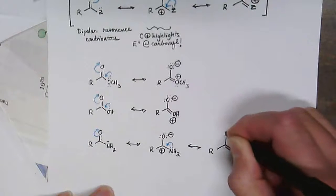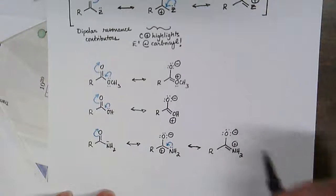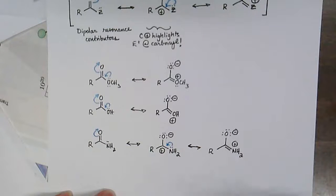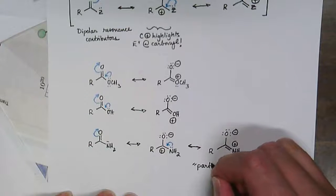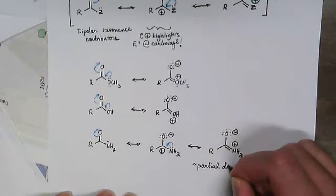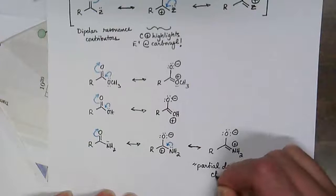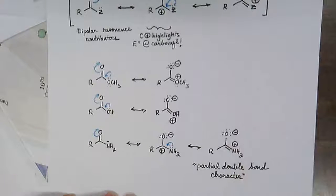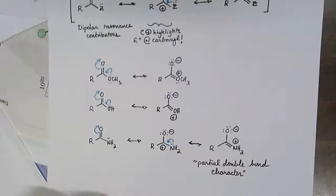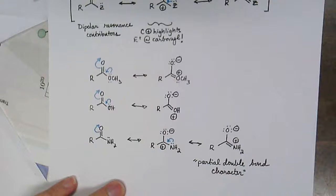It is this dipolar resonance form of amides that biochemists usually describe as partial double bond character. And this is nice because also nitrogen is less electronegative than oxygen, so we ought to say that this resonance contributor would be more significant